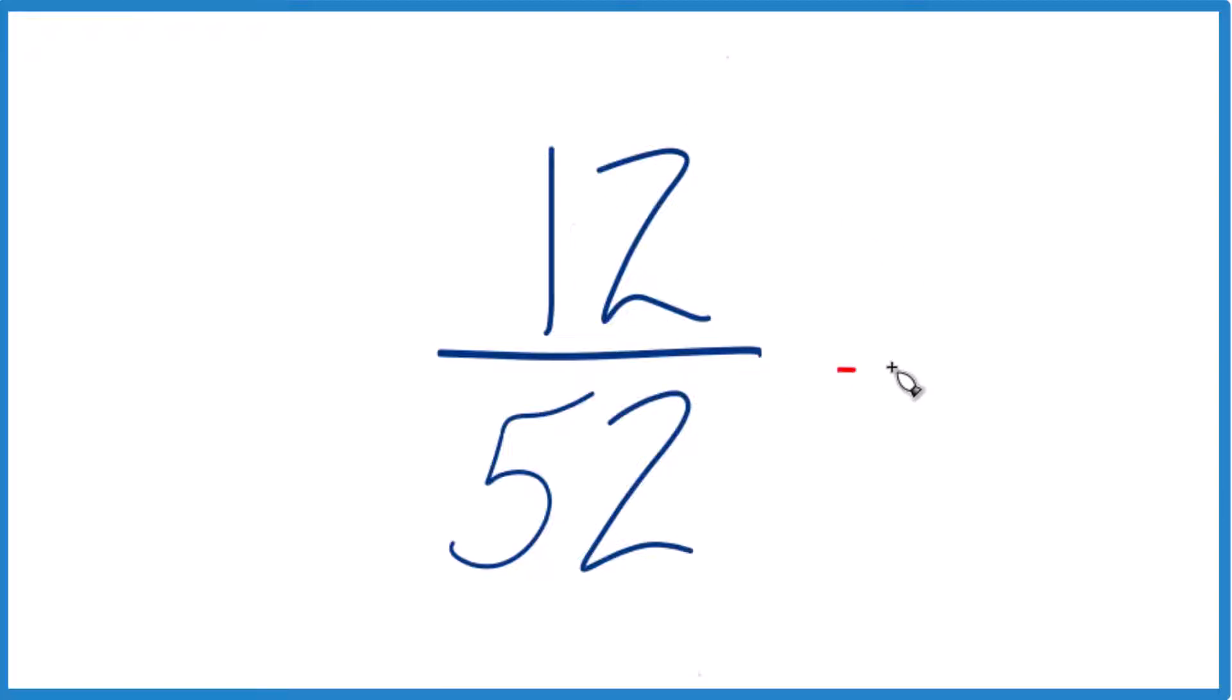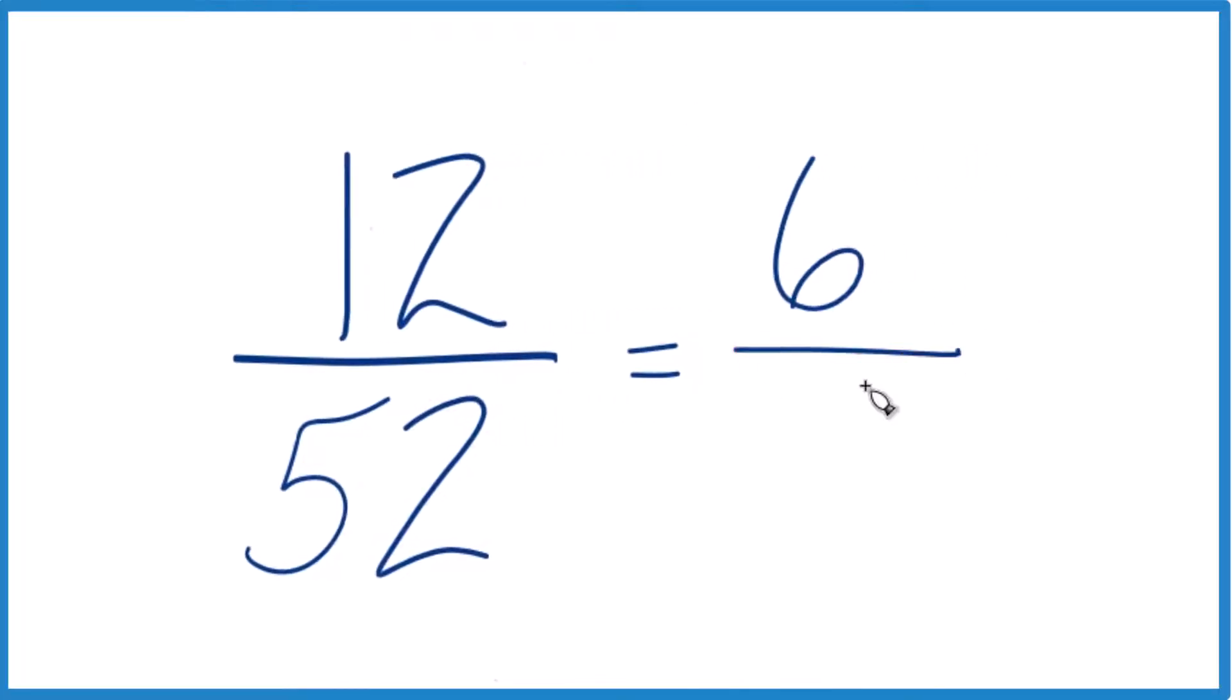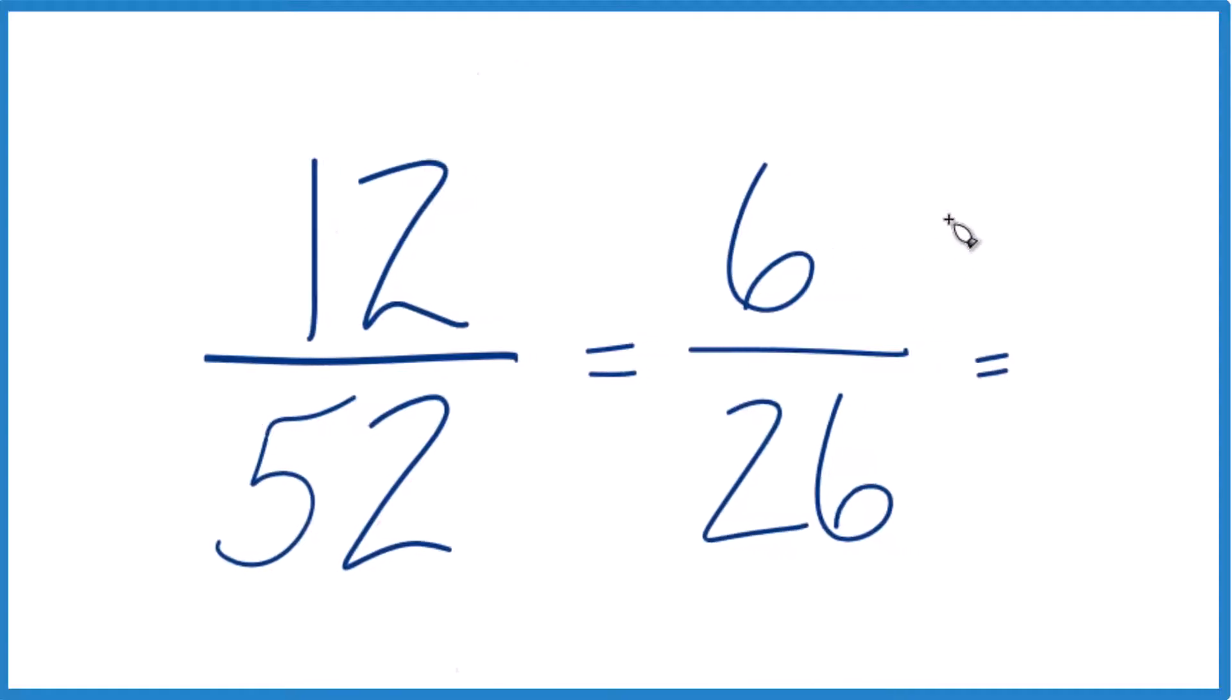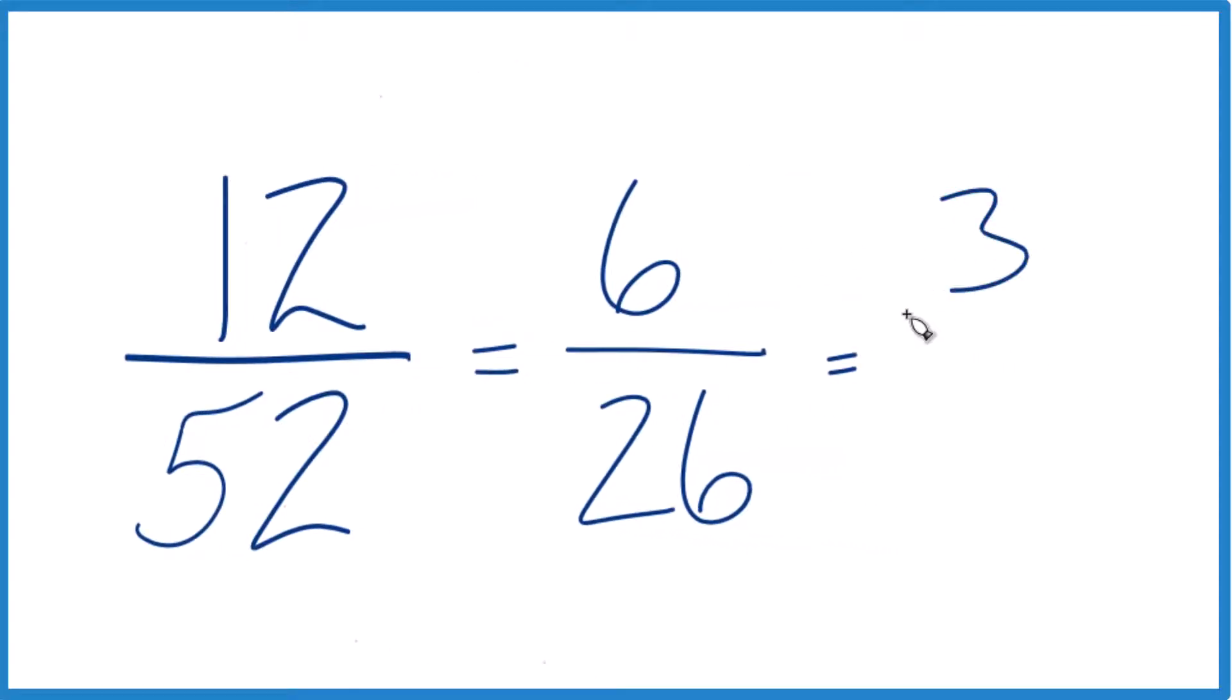We could say 12 divided by 2 is 6, and 52 divided by 2, that would be 26. 26 times 2 is 52. Still even numbers, so let's divide 6 by 2, we get 3. 26 divided by 2 is 13, and we can't simplify that any further. So 12/52, that reduces down to 3/13.